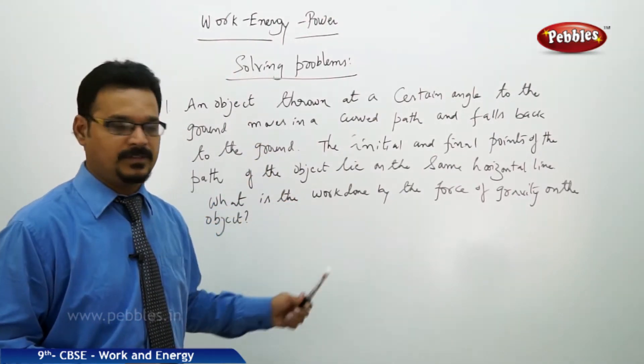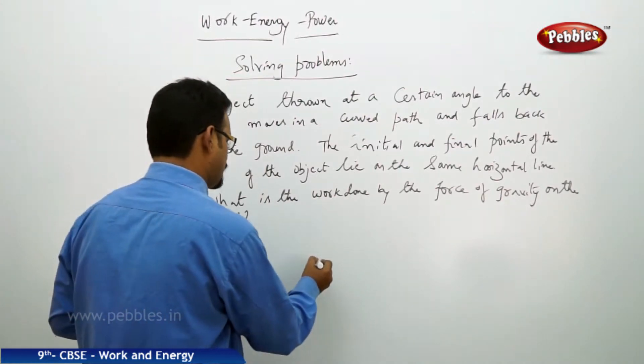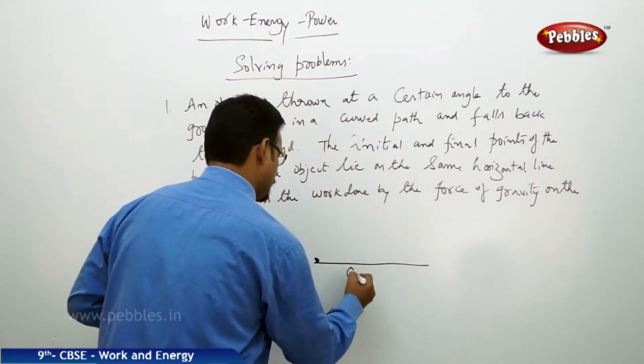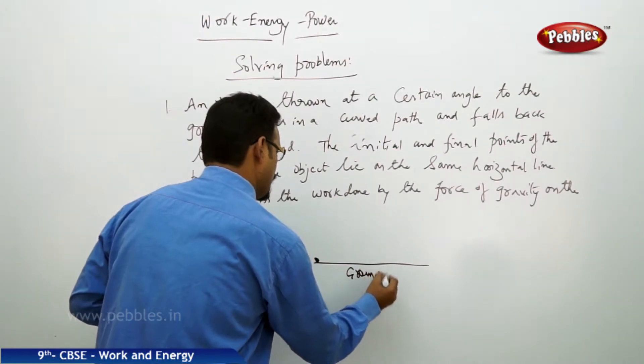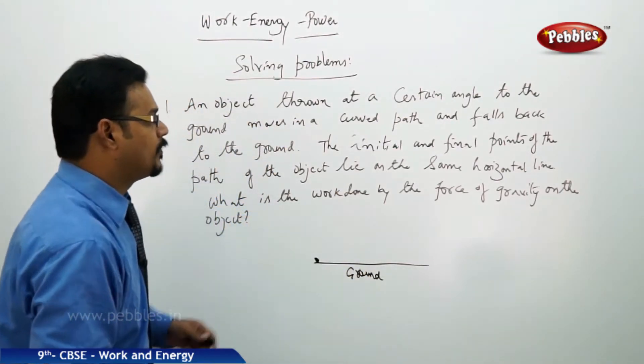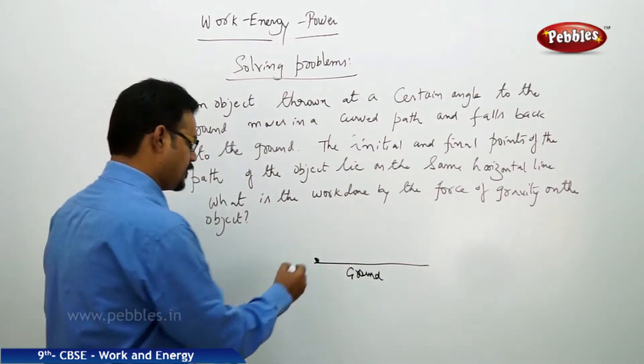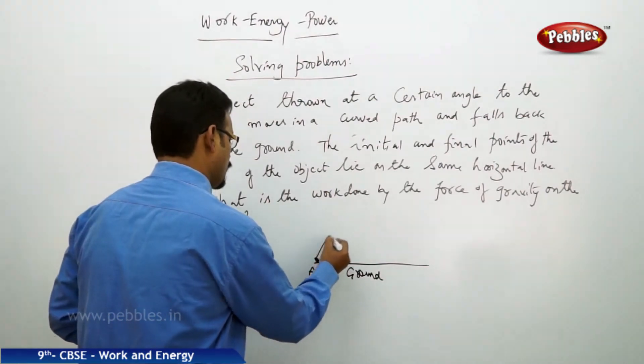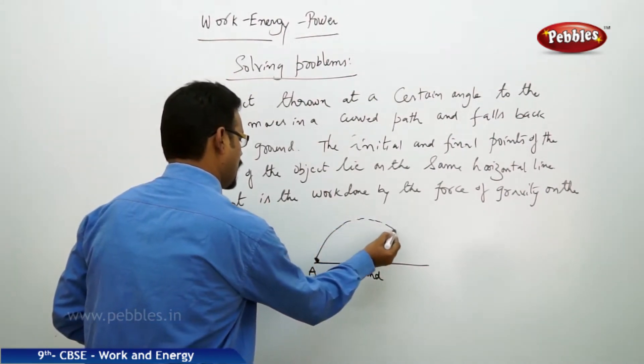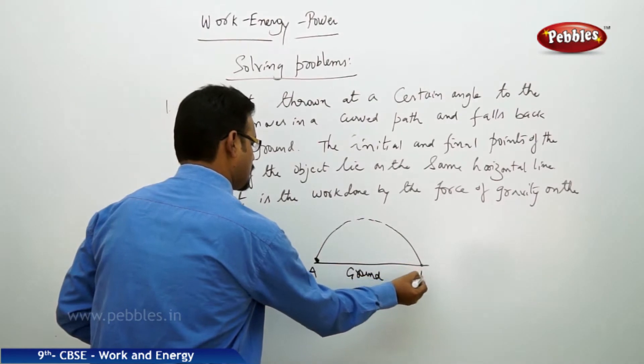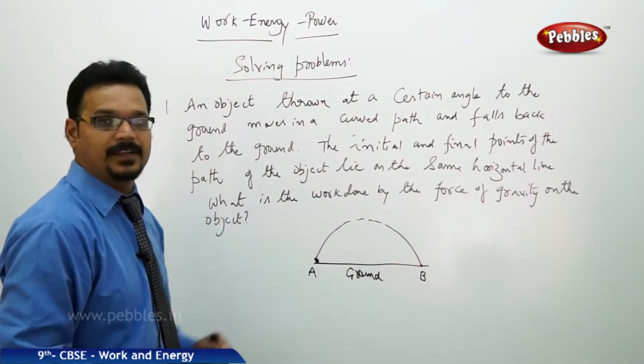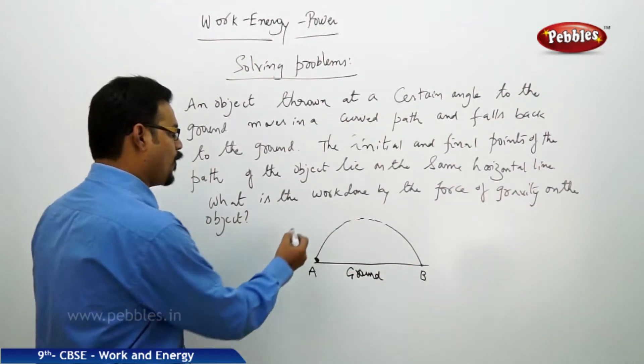Seems to be a big question but it's not if you frame the question in terms of a pictorial representation. See here, there's an object, this is the ground, and it is thrown making some angle to the ground. At point A it's thrown and it describes a curved path and falls onto point B on the same horizontal line.